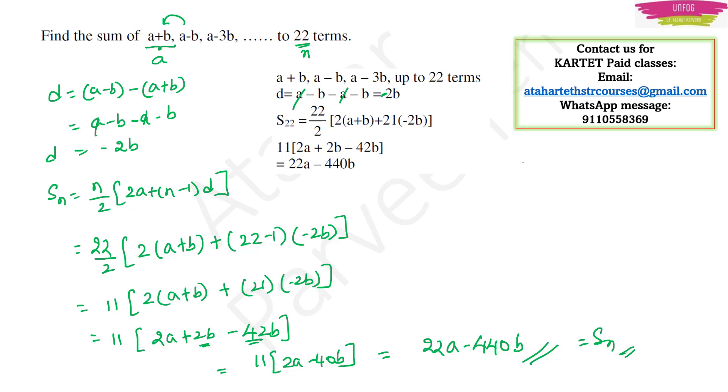So they will give you four options a, b, c, d. In that one of the option will be 22a minus 440b. That will be the correct answer.